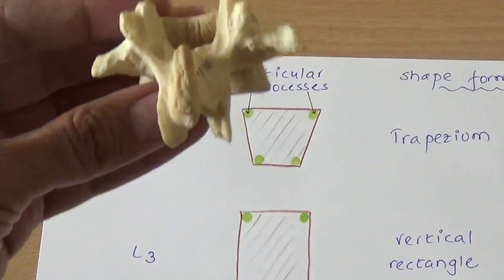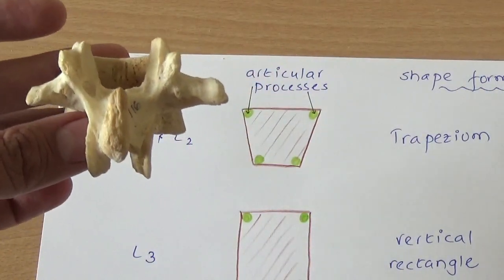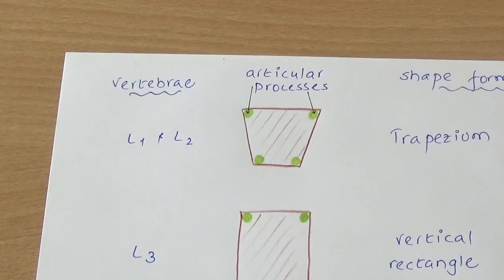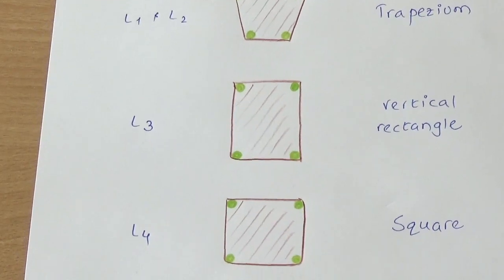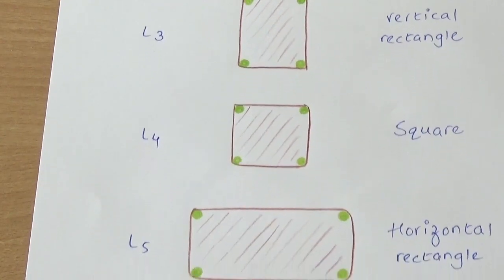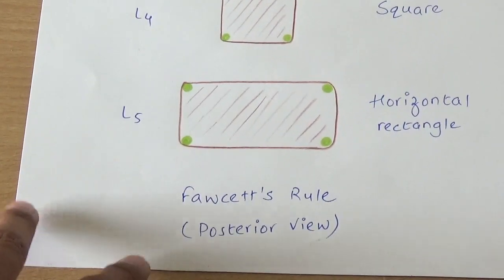According to the shapes formed, you can clearly identify or determine the number of a given lumbar vertebrae. This is termed as Fawcett's rule.